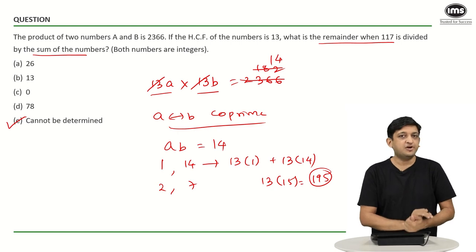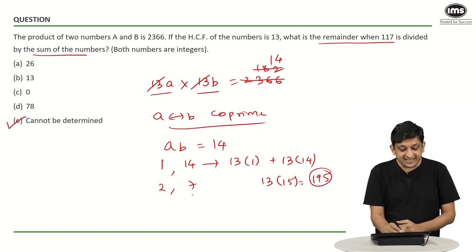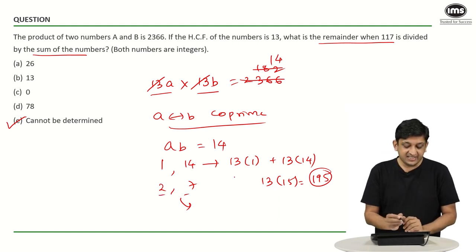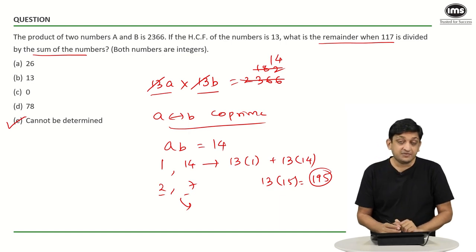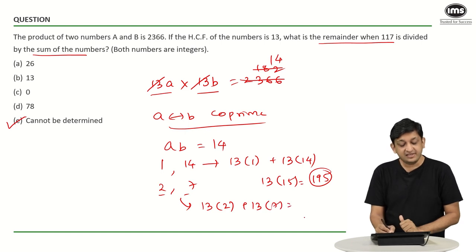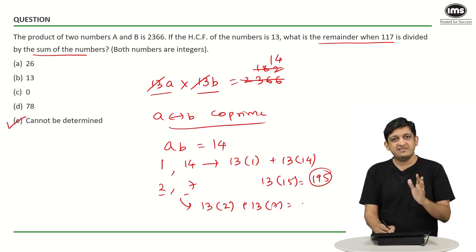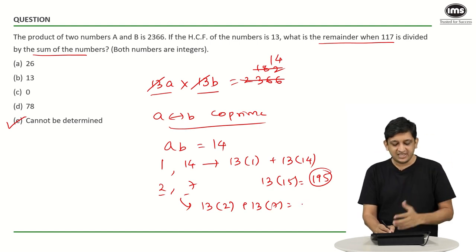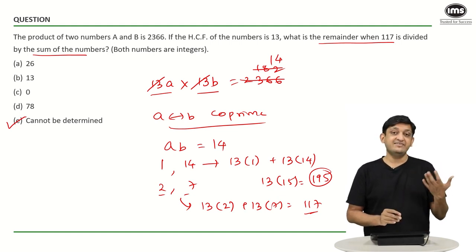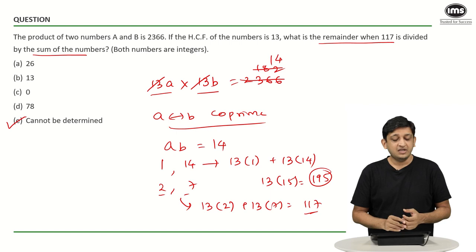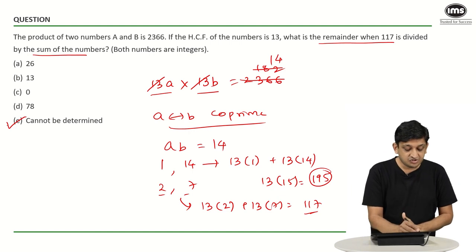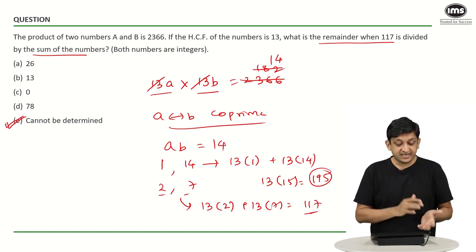So the answer is most probably 'cannot be determined.' The second case (A=2, B=7) confirms this. Sum = 13×2 + 13×7 = 26 + 91 = 117, or 13×9 = 117. When 117 is divided by 117, the remainder is 0. So the remainder could be 117 or 0 depending on the case — we cannot say for sure. The correct answer is Option E: cannot be determined.